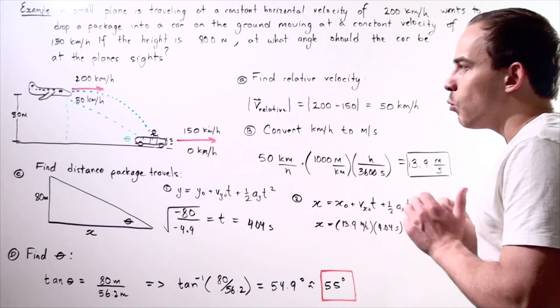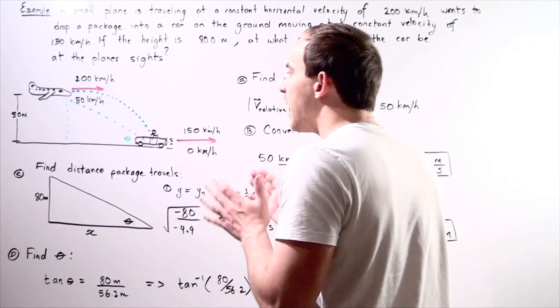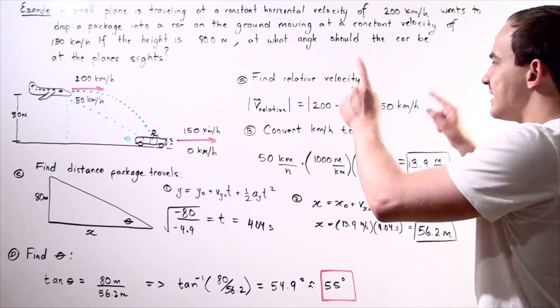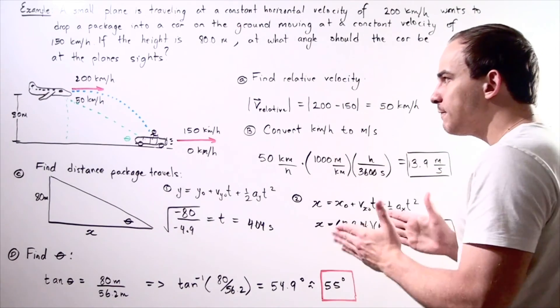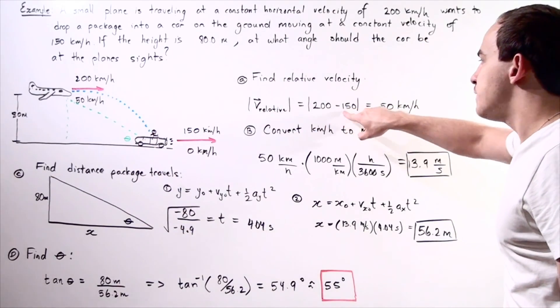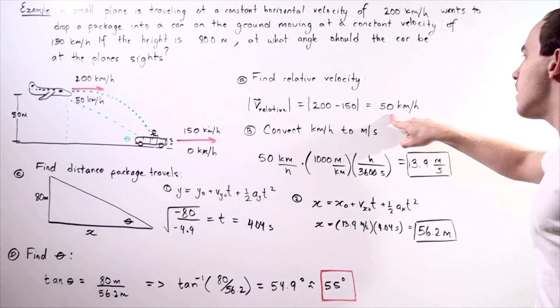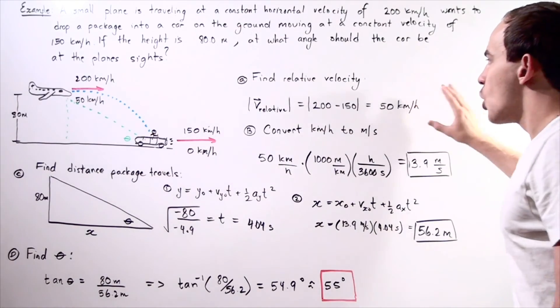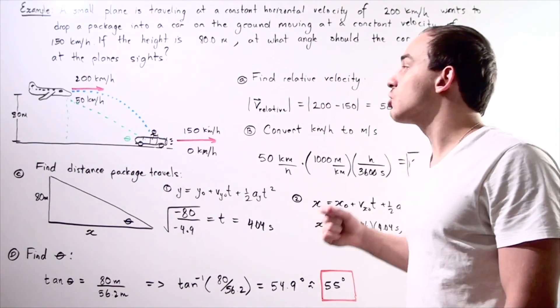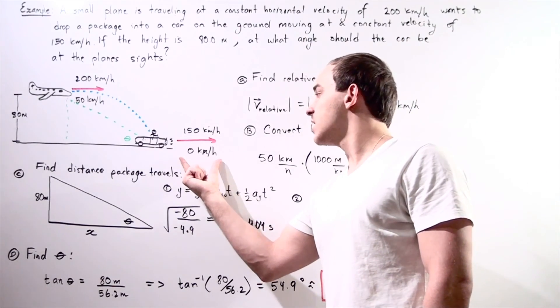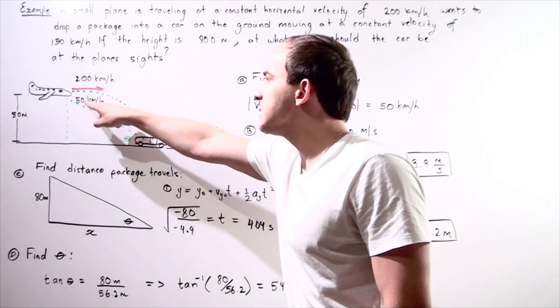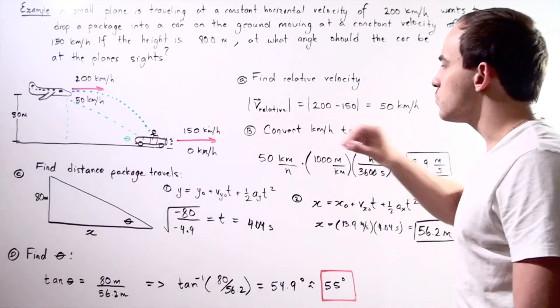So in the first step, we're going to simplify our problem by finding the relative velocity. To find the relative velocity, we simply take the absolute value of the difference between the velocities of the two objects. So 200 kilometers minus 150 kilometers gives us 50 kilometers per hour. In other words, what we just did is the following. Now we're making the assumption that our car is stationary, so zero kilometers per hour. And our plane is moving with the velocity of 50 kilometers an hour. So let's go to step B.